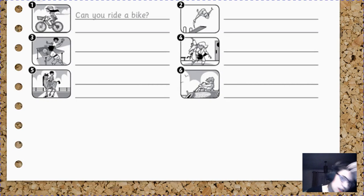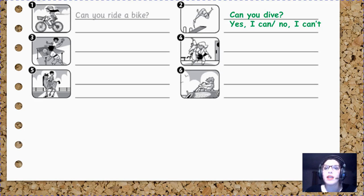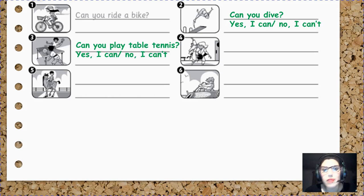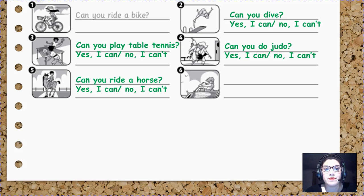And in this activity you have to write the question and answer the question with your information. So we have number one: Can you ride a bike? Yes I can or no I can't. Number two: Can you dive? Yes I can or no I can't. Depending on if you can do it or not. Can you play table tennis? Can you do judo? Can you ride a horse? And can you roll?